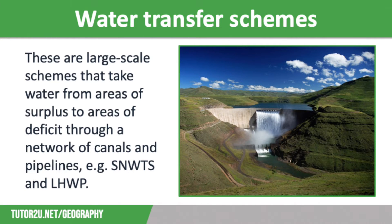Another example is the Lesotho Highlands Water Project, which transfers water from Lesotho to South Africa. Lesotho is an LIC and is landlocked — entirely surrounded by South Africa. It has a water surplus because it is mountainous with high precipitation and a low population. South Africa, by contrast, has a large population with uneven rainfall, particularly in the south and west. The project involves the construction of dams such as the Katze Dam, reservoirs, pipelines, and other infrastructure including roads and bridges.